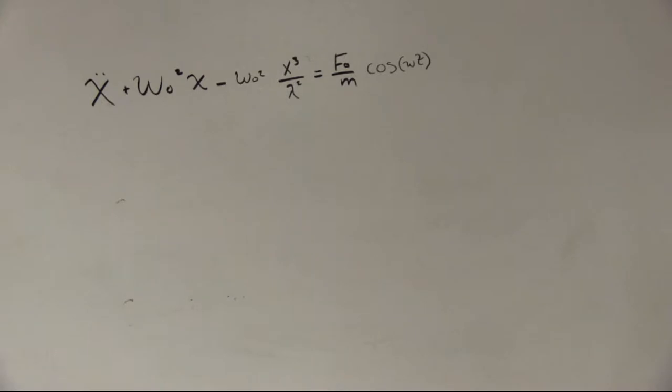Here we have Duffing's equation without damping included. Non-linearity in the system comes from the presence of the x-cubed term. The coefficient of the x-cubed term is negative as we are assuming softening in the system rather than hardening from the non-linearity.